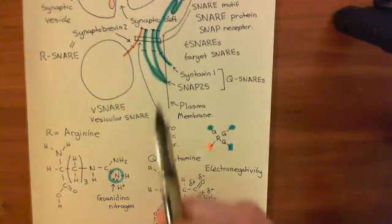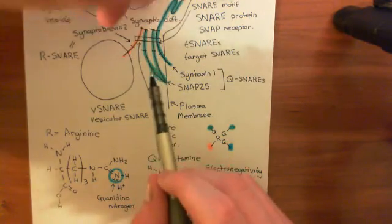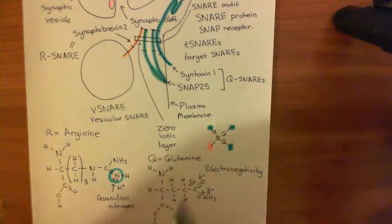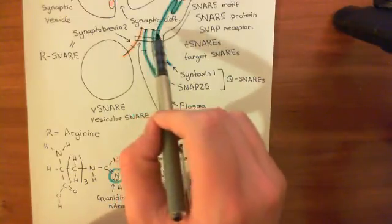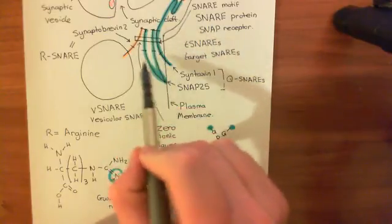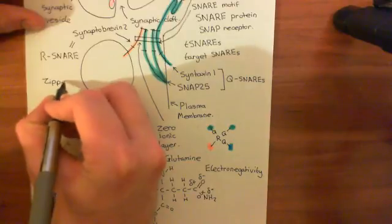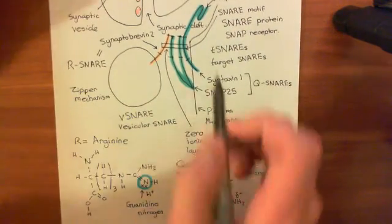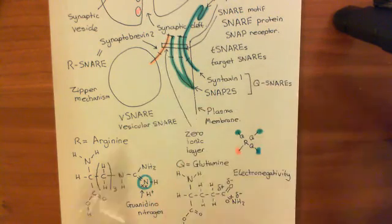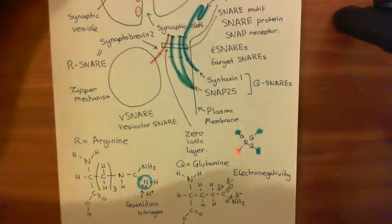Now what we want to look at is the other interaction that holds the core SNARE complex together. Basically, what's believed to happen is these alpha helices are going to wrap around one another — imagine taking all four of them and twisting them together. It's believed that this wrapping begins at these three tips and then spreads downwards towards the end. This mechanism of intertwining is known as the zipper mechanism, because it starts at one end and then the intertwining of these alpha helices spreads downwards closer and closer to the portions of the proteins anchored to the phospholipid bilayers. We'll continue this discussion in the next video.